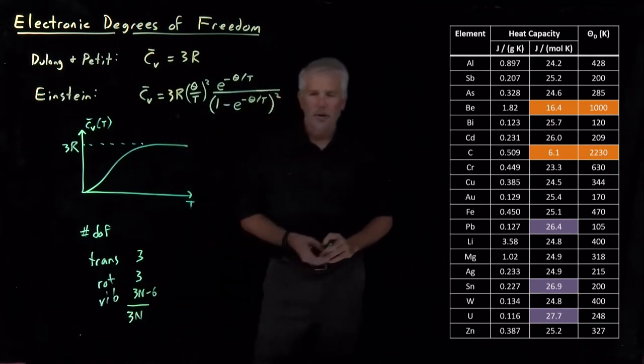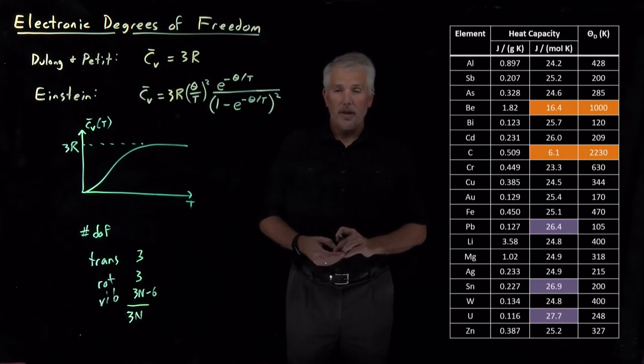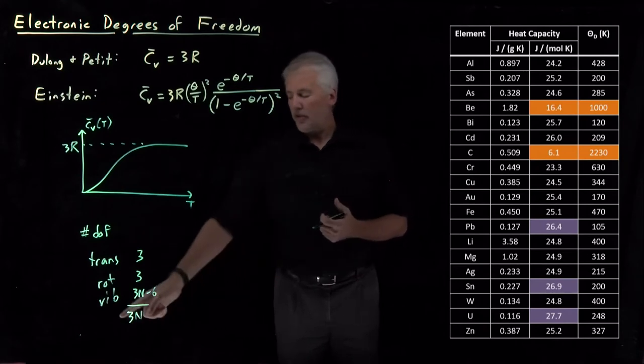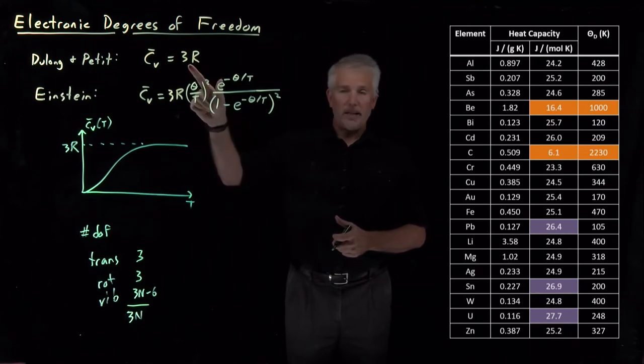Each of which contributes a factor of R to the heat capacity. 1.5R from the potential energy, 1.5R from the kinetic energy, all together those 3N factors of R give me a total heat capacity of 3N times R for atoms.